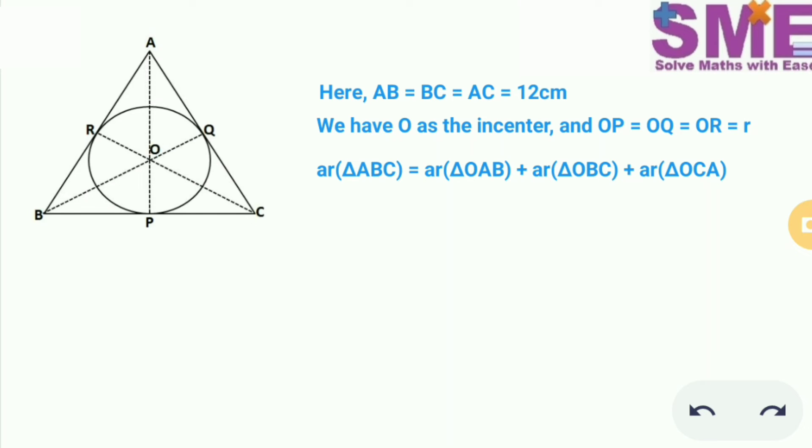Area of the equilateral triangle ABC is equal to root 3 by 4 into side square and area of the other three triangles we will use the formula half into base into height.